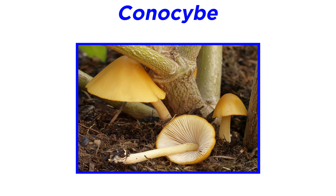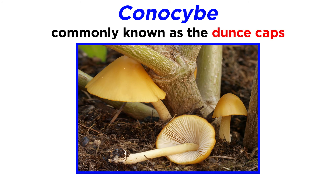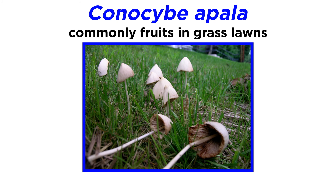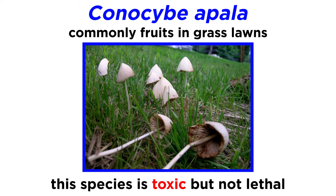Now we will move away from Psathyrellaceae to discuss the genus Conocybe, commonly known as the dunce caps due to their conical or bell-shaped caps. They are small, fragile, usually brown mushrooms that are saprobic on grass and other substrates. A common species is Conocybe apala, a mushroom that notably fruits in grass lawns. The mushroom is toxic but not lethal, so keep your pets and children away. It has a pale brown color, and you will find it when the weather is hot and humid.